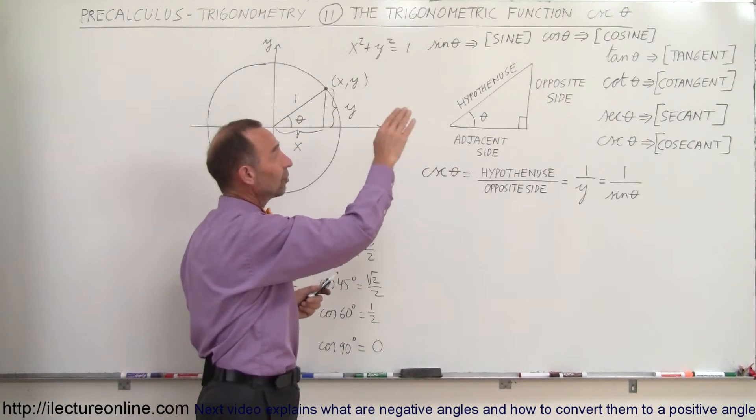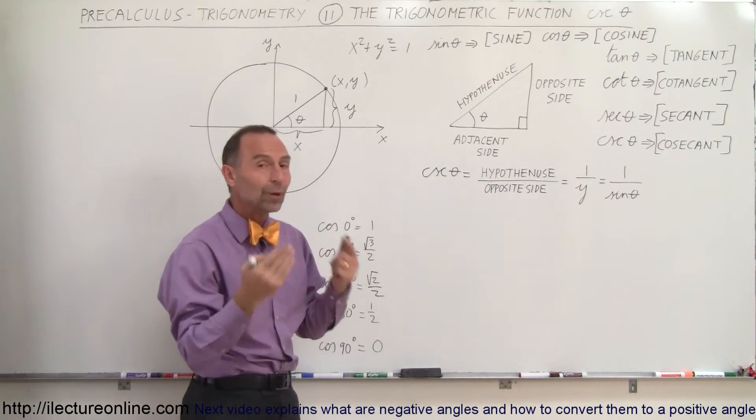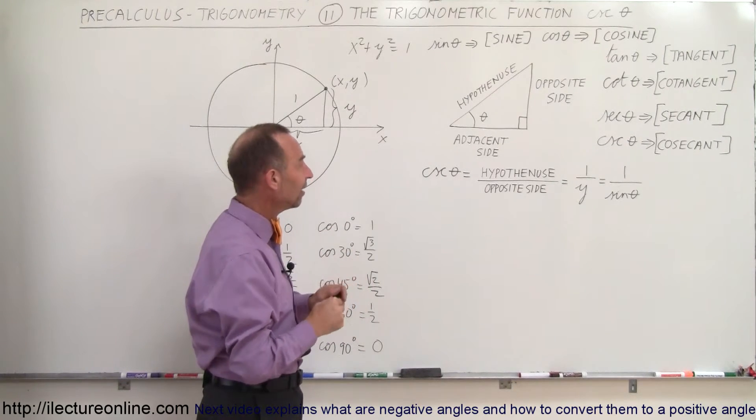All the trigonometric functions—the sine, the cosine, the tangent, the cotangent, the secant, and cosecant—are defined in terms of the ratios of these sides.